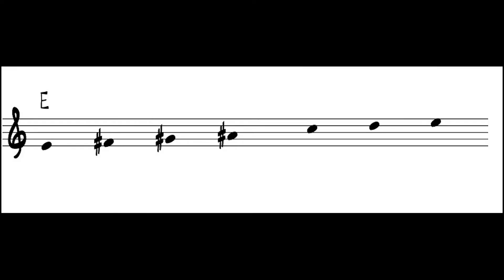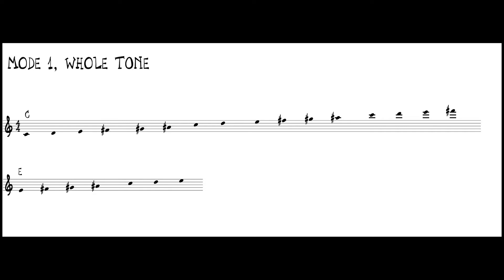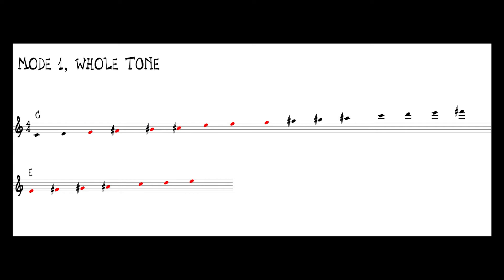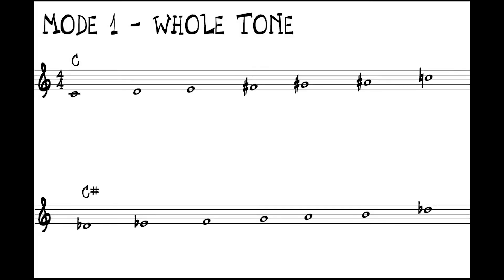If we look at a whole tone scale starting on E — E, F sharp, G sharp, A sharp, C, D, back to E — and compare it to the scale that starts on C, we can see that the notes are exactly the same. A whole tone scale starting on E has the same six pitches as a whole tone scale starting on C. So a whole tone scale starting on C, D, E, F sharp, G sharp, or A sharp all belong to the same whole tone scale collection.